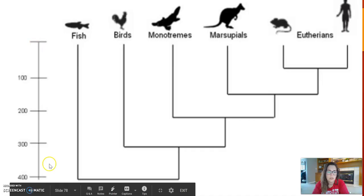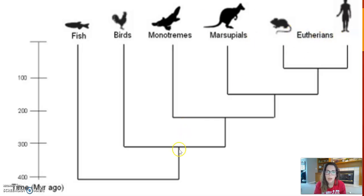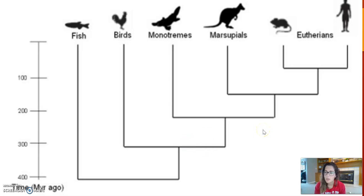The tree goes from present day back to 400 million years ago. Wherever you see these branches splitting, that's the speciation event — this one separated marsupials from eutherians, this one separated monotremes from other mammals, and way back around 300 million years ago was the speciation event that separated birds from mammals.